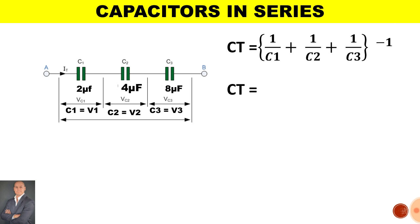Therefore we say 1 over C1 plus 1 over C2 plus 1 over C3 all to the power of minus 1 in order to invert the answer. Therefore 1 over 2 plus 1 over 4 plus 1 over 8 all to the power of minus 1 is equal to 1.143 microfarad.